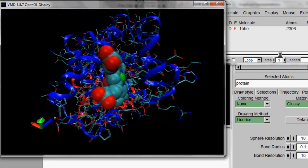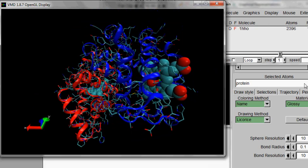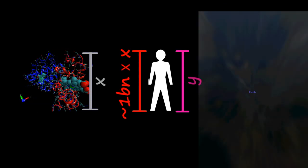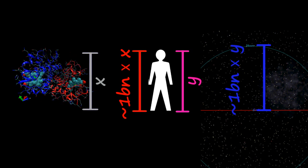Each of those hemoglobin molecules is about a billion times smaller than you. And just to put all that into perspective, the ratio of size of the hemoglobin molecule to you is about the same as the ratio of your height to the distance of the moon.